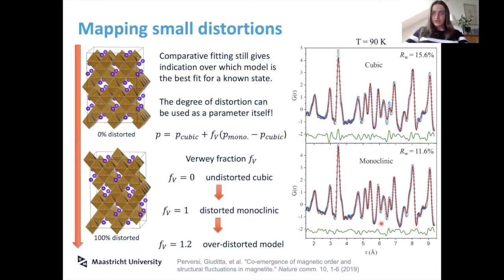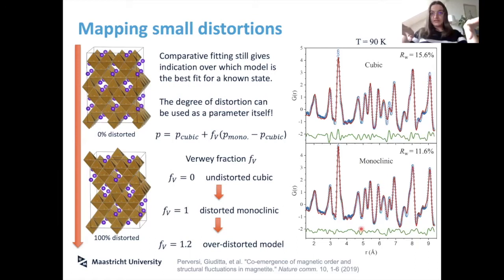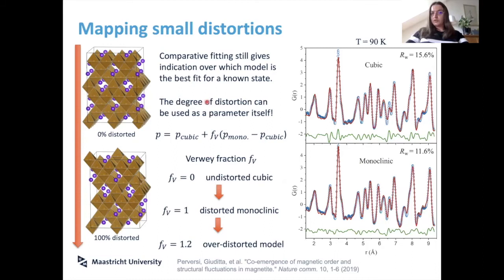That doesn't mean you can't try fitting the model you have to the distribution. A 90 K pattern gives a feasible fit to the cubic but a much better fit to the monoclinic. You have two models refined with single-crystal X-ray diffraction — atomic positions as precise as you can get — and there could be something in between. By eye the undistorted and completely distorted versions are almost impossible to distinguish, but this is generated with ISODISTORT, moving the structure back and forth.